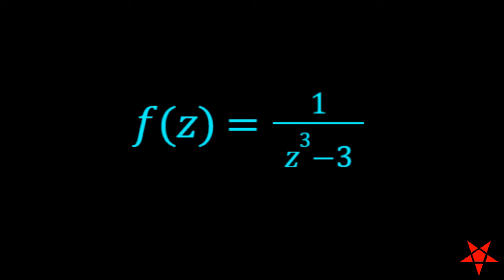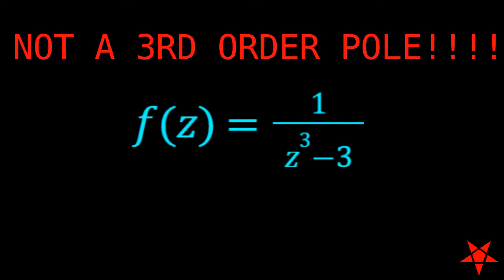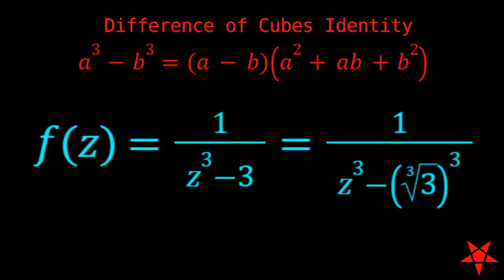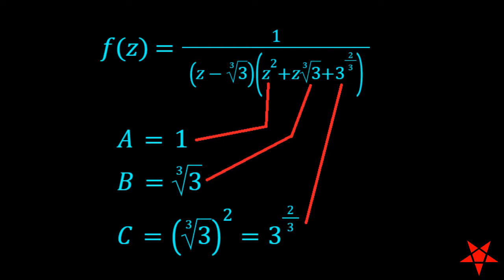It is important not to mistake this for a third-order pole at z equals the cube root of 3. The actual result is much more nuanced. If we convert the 3 on the right into the cube of the cube root of 3, then we can apply the difference of cubes identity. From here, the second-order term can be broken down with the quadratic formula.